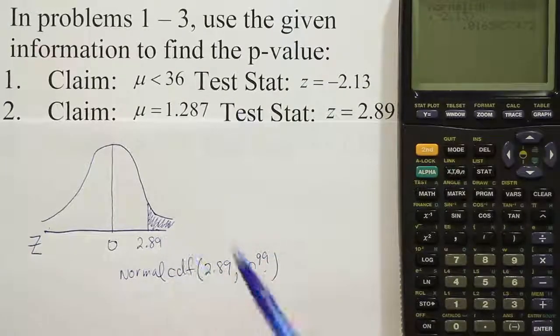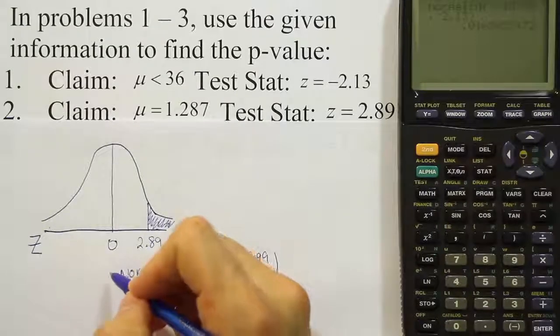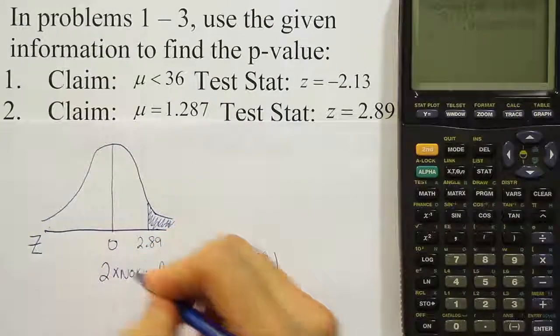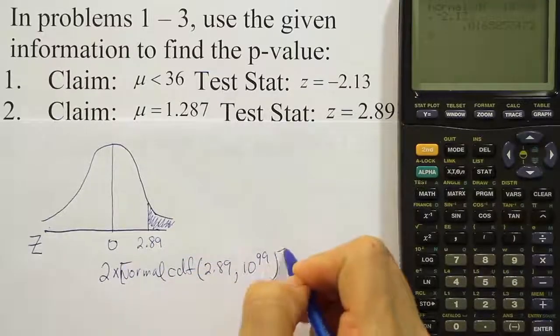And then from there, that will give us the area. But we need to remember that we have to multiply times 2. So we're going to do 2 times the normal CDF option.